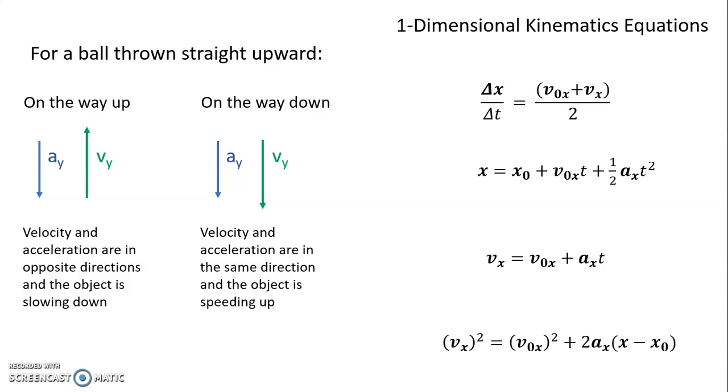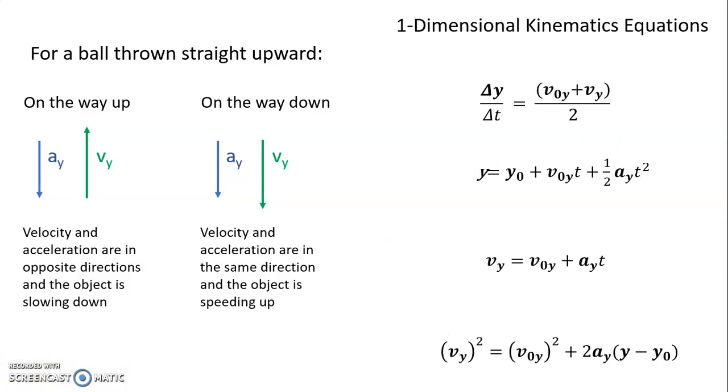All right, so now that we know that the acceleration for an object in free fall is 9.8 meters per second squared downward, which if you pick up as positive, then it's going to be negative 9.8. And that means in these equations over here, we change all the x's into y's, and now it's the exact same equations, but they apply to the vertical direction. Now, this might seem like it's more difficult than what we were doing in module two, but I actually think it's easier.